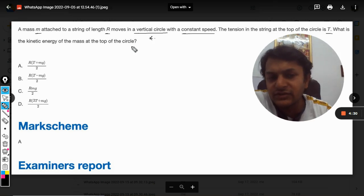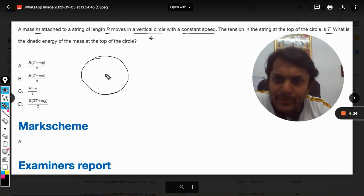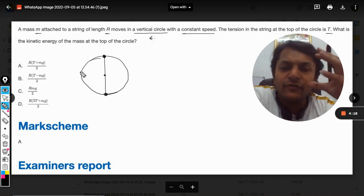mass at the top of the circle? So let's say the bob or the mass is rotating like this and it has reached the top. We have to see what are the total number of forces that